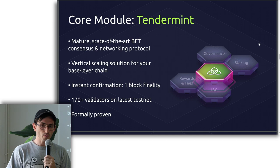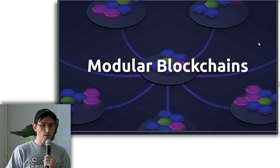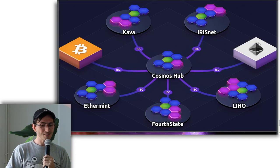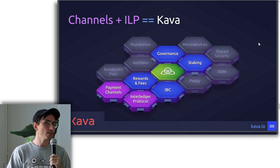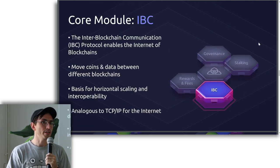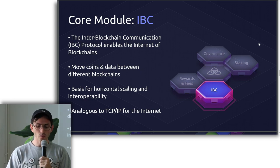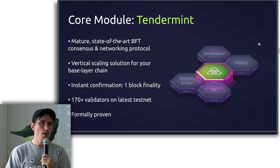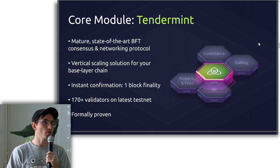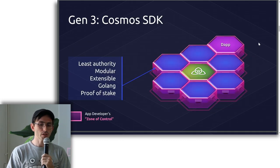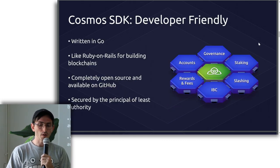That gave birth to the idea of the internet of blockchains. The basic idea is that it makes a lot more sense for each application to have its own blockchain, have its own security concerns, its own resource allocations, its own state — but to not limit a blockchain to itself by creating a form of communication between blockchains so that you're not restricted to your own space.